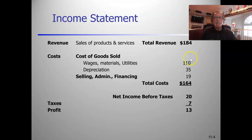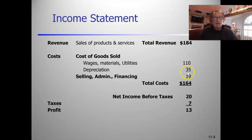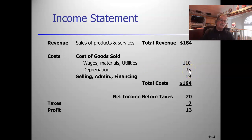On our income statement we have total revenue, cost of goods sold - wages, materials, utilities - depreciation, and other costs, down to a total cost. Taxes are paid on net income before taxes, so the larger the total cost, the smaller our tax payment will be. An expense is either taken all at once in wages, materials, and utilities, or in the depreciation line item over time.